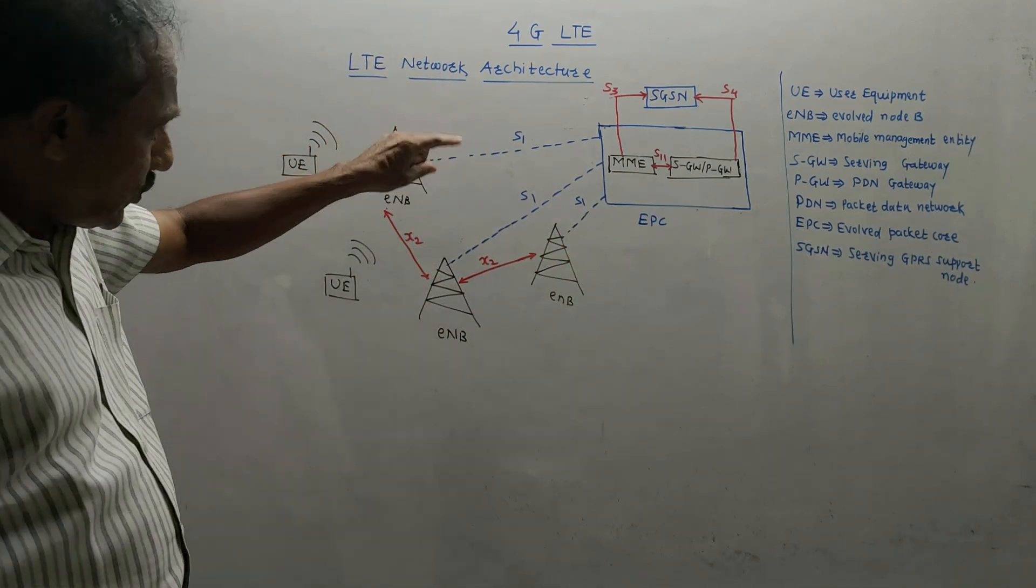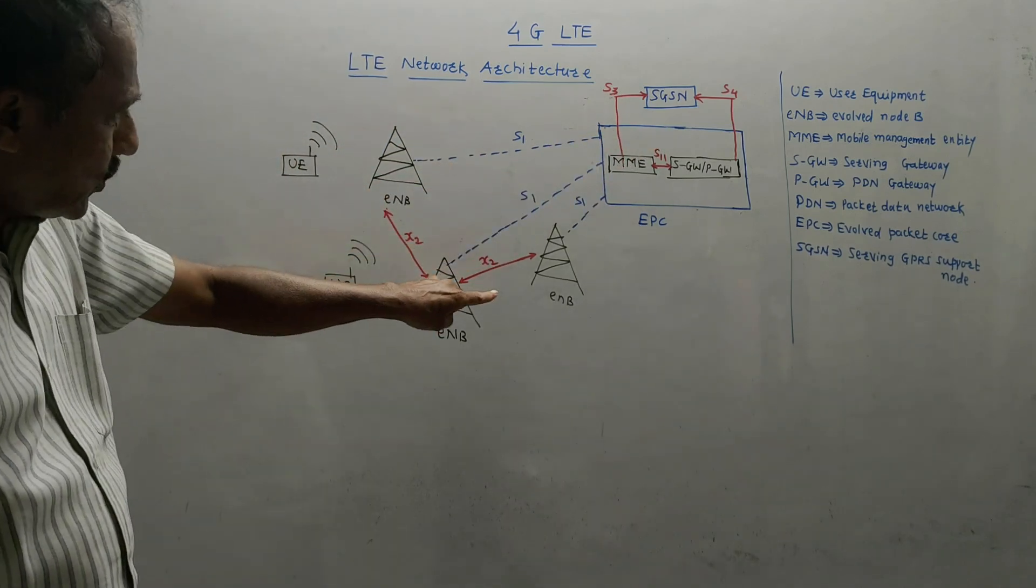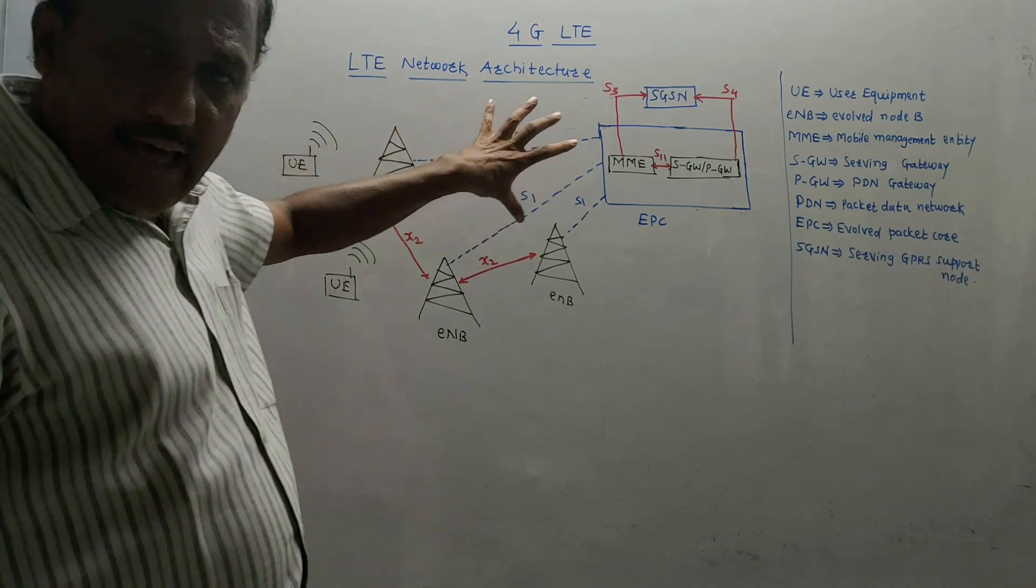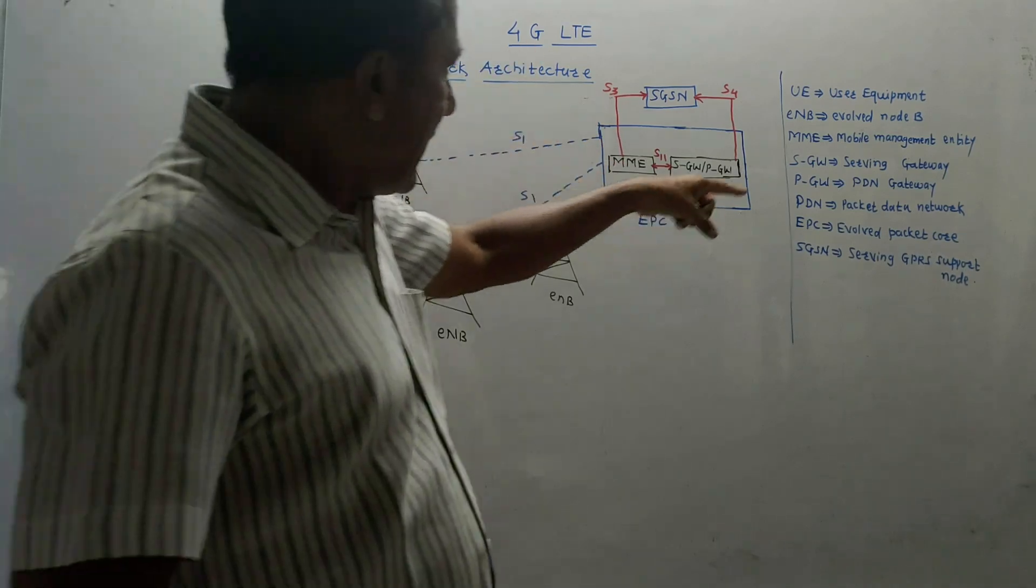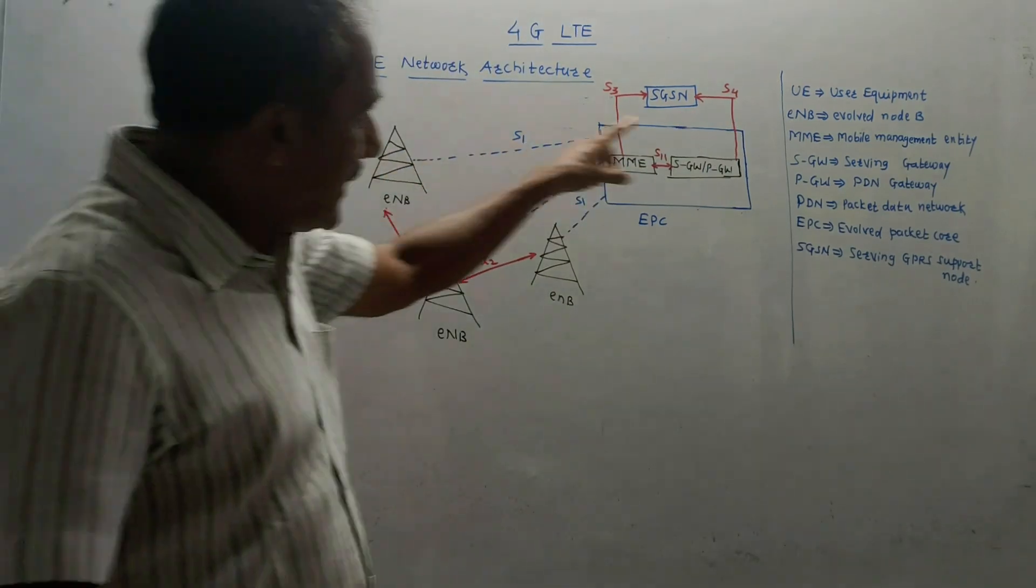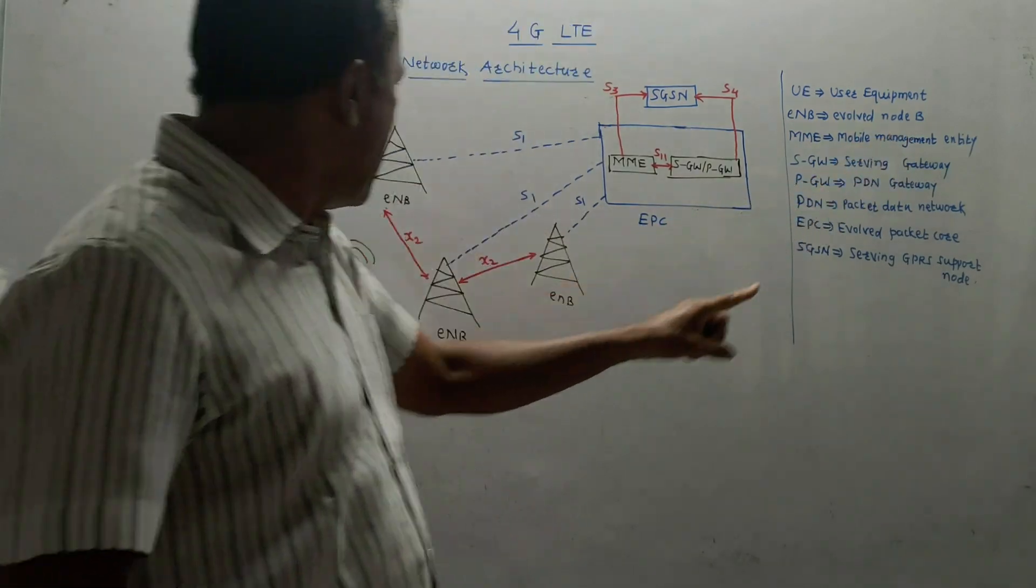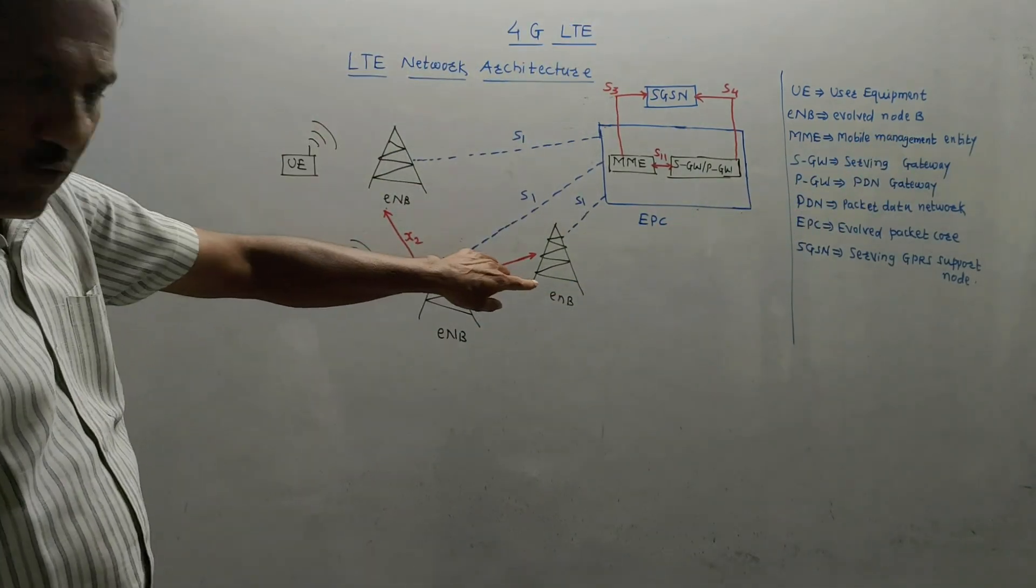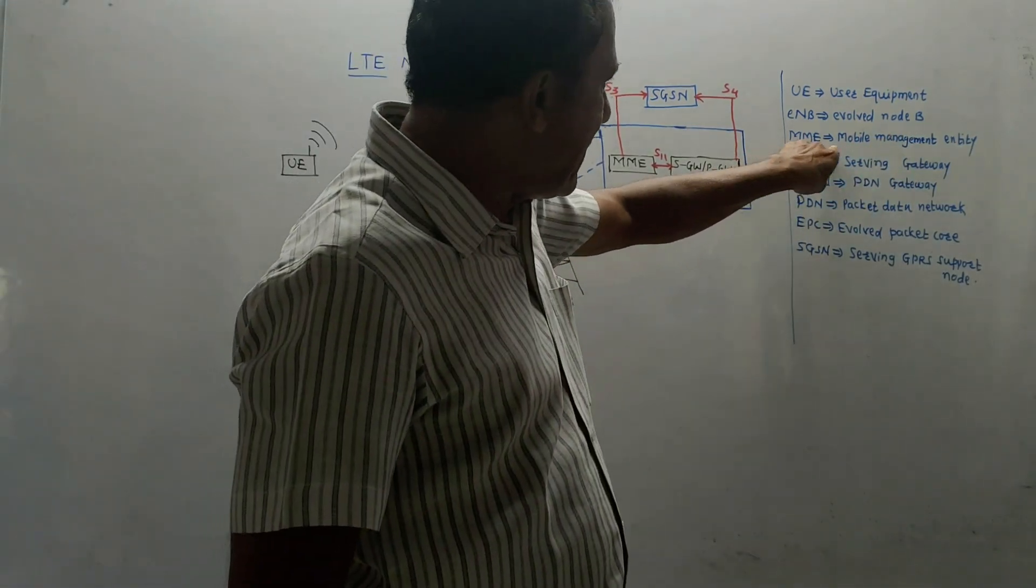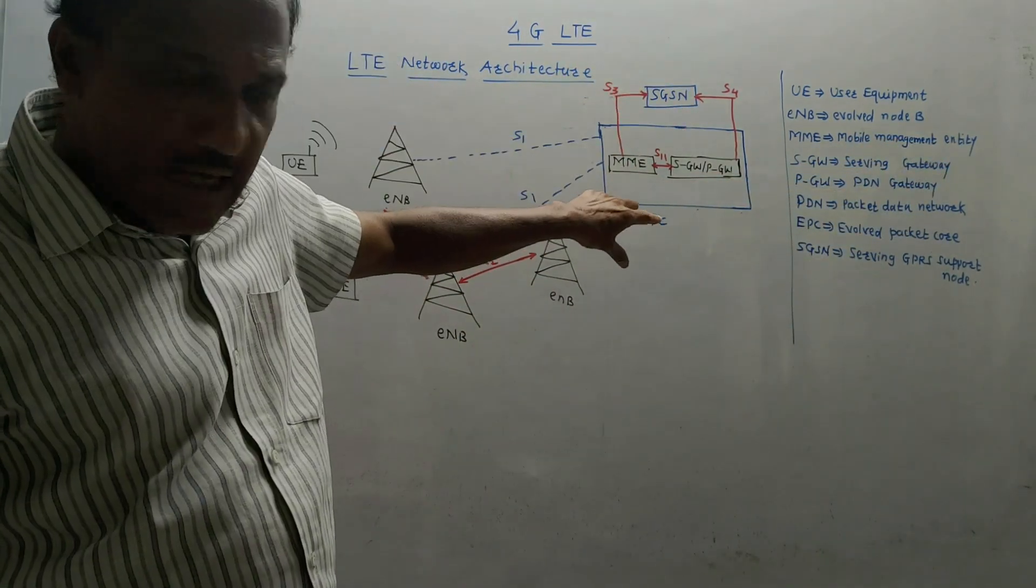I have used short form to draw this diagram, so here S1 to S11 and X2 are acting as interfaces. Then I have written the meaning of each term. UE is user equipment, ENB is evolved node B, EPC, then MME, mobile management entity, which is part of EPC.